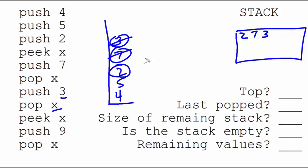Peek x means we look at the 2. Push 9 means a 9 goes up here. Pop x means the 9 is popped. And now we're done with the sequence.